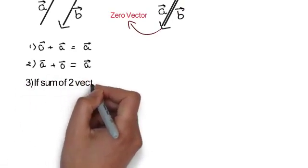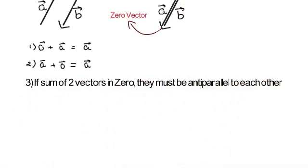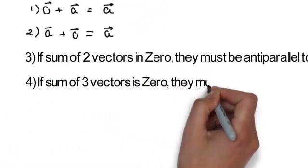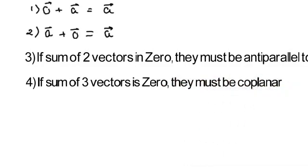If the sum of two vectors is zero, they must be anti-parallel to each other. If the sum of three vectors is zero, they must be coplanar.